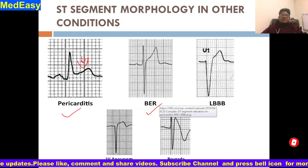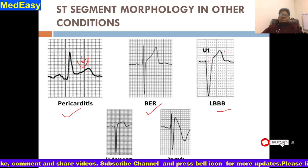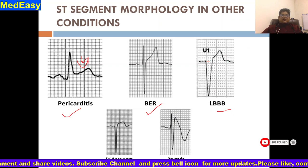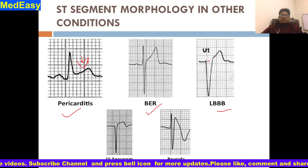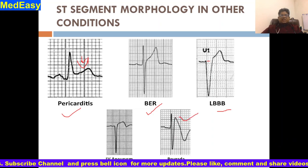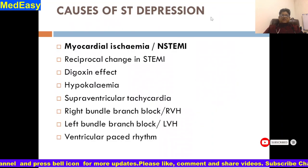In BER (benign early repolarization), there is J-point elevation especially. In left bundle branch block, there is wide QRS plus elevated ST. In LV aneurysm, there is a typical aneurysm morphology. In Brugada syndrome, this is a distinct ST elevation pattern — not typical STEMI-type elevation. These are different variants and morphologies of ST elevation seen in other conditions.